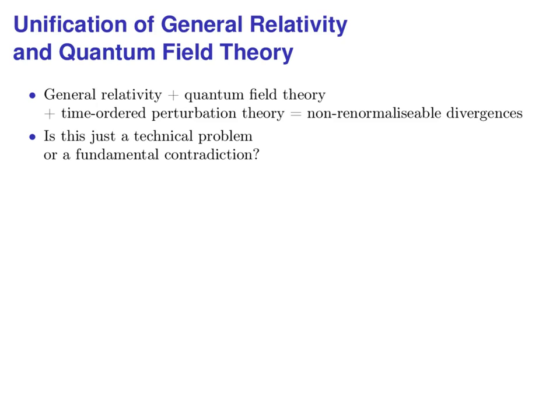There are very interesting approaches to overcome these problems. The best known one is string theory. As of today, there is however no experimental evidence that any of these approaches might be close to reaching its goal. So, time-ordered perturbation theory does not work for gravity. This method is very important, but in the end it is just a calculation method. Is this really the whole story? Isn't there a fundamental mathematical contradiction between both theories?